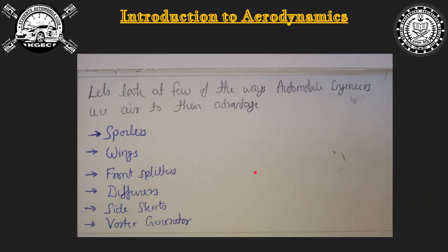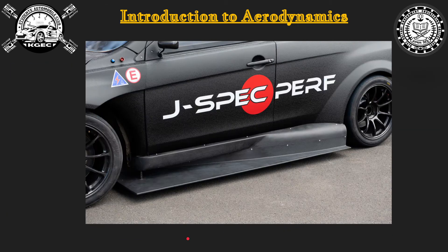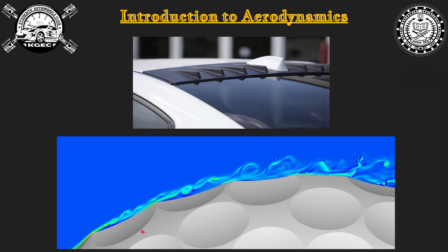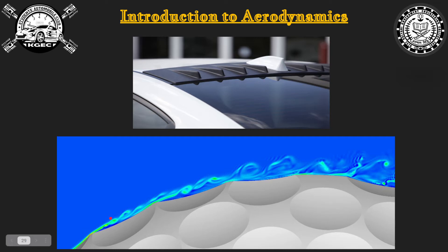Lastly we have vortex generators. Similar to the dimples on a golf ball, the dimpled surface creates recirculating turbulent air. In the CFD diagram you can see that this turbulent air brings high velocity fluid closer to the surface, which delays the flow separation problem. The same technique is used with vortex generators.